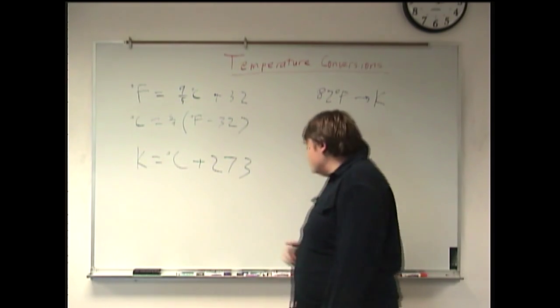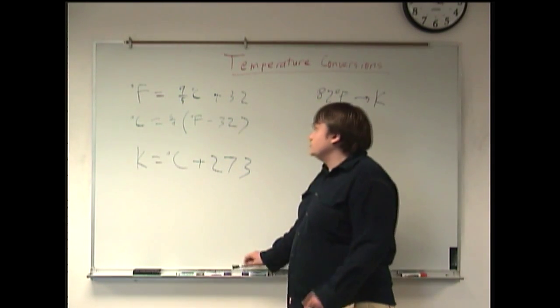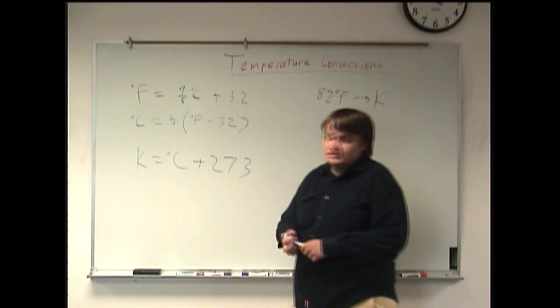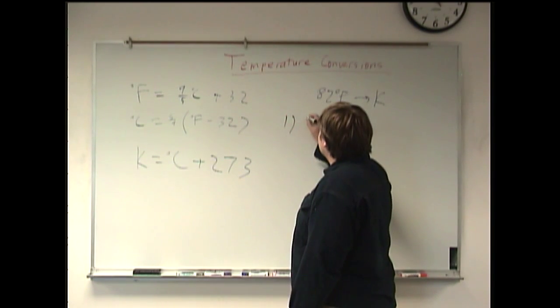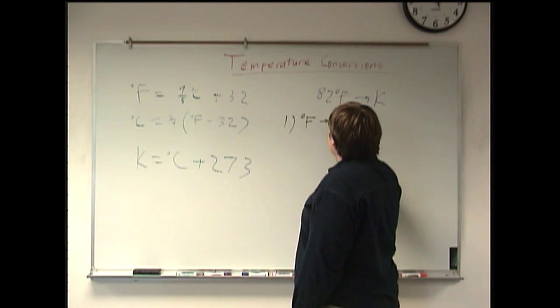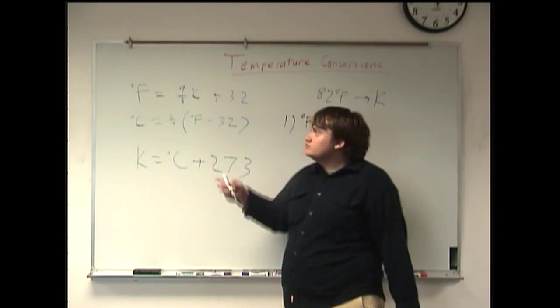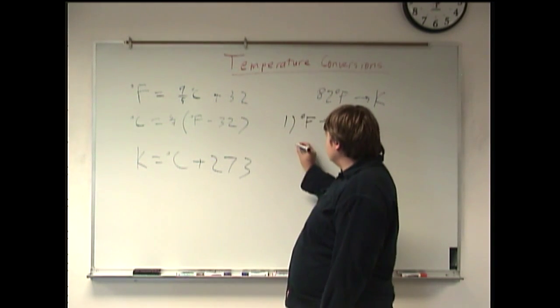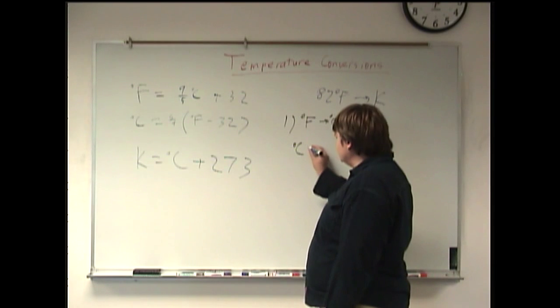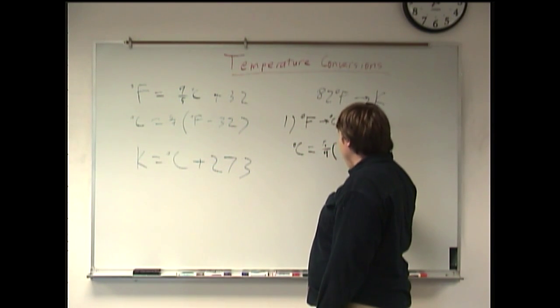So that's what we're going to be doing. Our first step is, of course, to convert Fahrenheit to Celsius. So, using the formula, degrees Celsius equals 5/9 times 82.